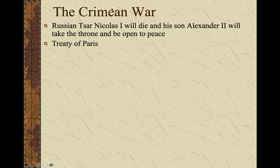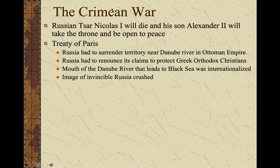Eventually, Nicholas I dies and his son Alexander II takes the throne and is open to peace. So we're going to see the Treaty of Paris. We're going to see some territorial changes — Russia is going to surrender some territory near the Danube, Russia is going to renounce its claims to protect the Greek Orthodox Christians, and we're going to see the mouth of the Danube be internationalized. But there are a couple more important implications from the Crimean War.